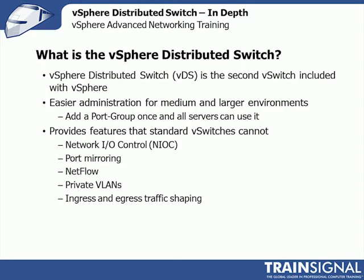So what exactly is the vSphere Distributed Switch? Simply put, there are two types of virtual switch included with vSphere: the standard vSwitch and the vSphere Distributed Switch, or VDS. With vSphere 5, VMware has settled on calling it the vSphere Distributed Switch or VDS. This is the second type of vSwitch and it's normally considered easier to administer for medium and larger environments, and really even for smaller environments — you just don't get that efficiency of scale.